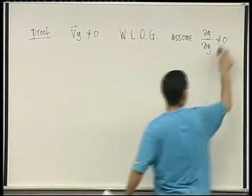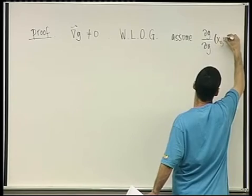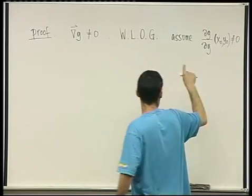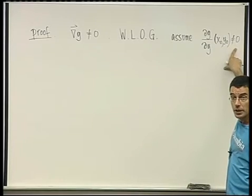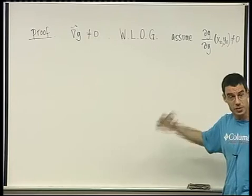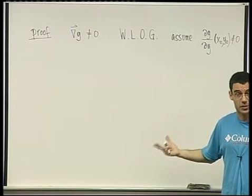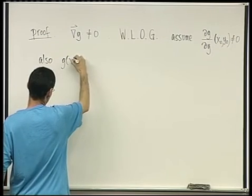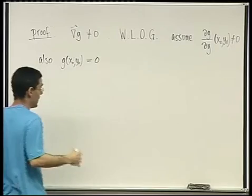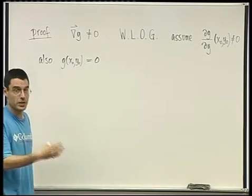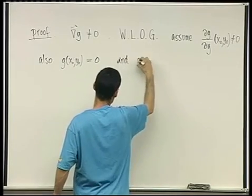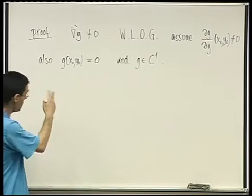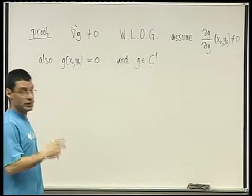This is at the point we're interested in, not everywhere. What we have is a function g whose derivative with respect to y is not zero, g is C1, and the point (x₀, y₀) satisfies g equals zero — it's a point on the constraint. These three conditions are precisely what's needed for the implicit function theorem to hold for g.